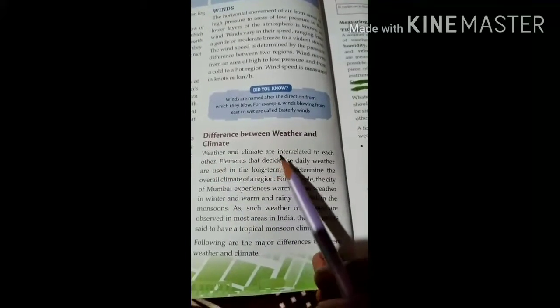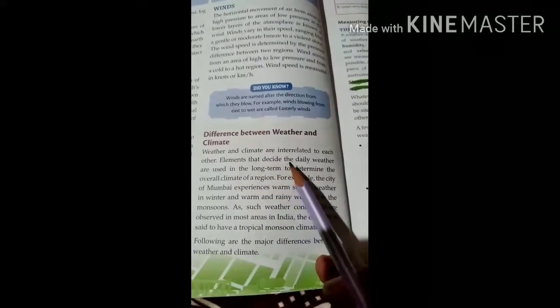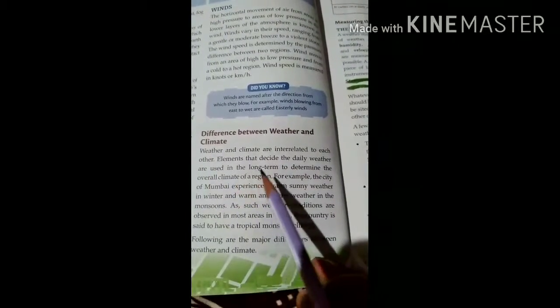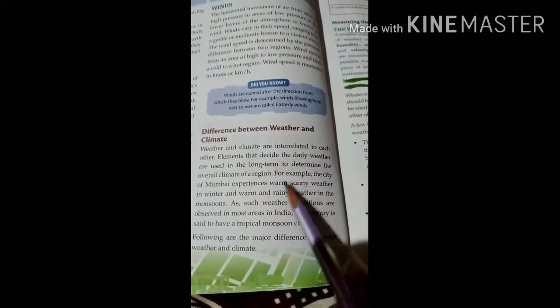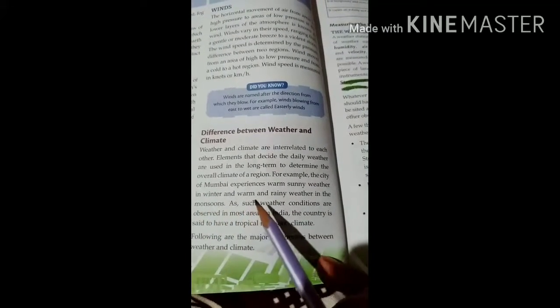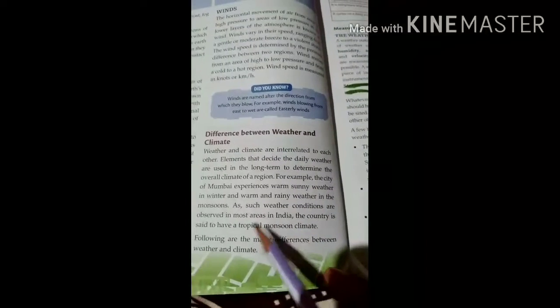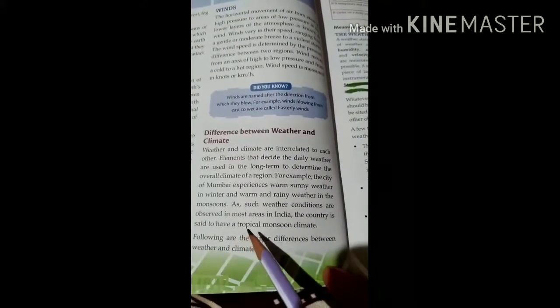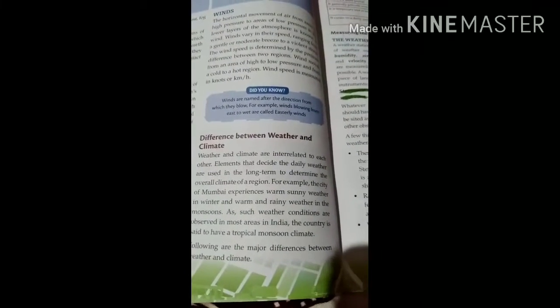Now difference between weather and climate. Weather and climate are interrelated to each other. Elements that decide the daily weather are used in the long term to determine the overall climate of a region. For example, the city of Bombay experiences warm sunny weather in winter and warm and rainy weather in the monsoon. As such weather conditions are observed in most areas in India, the country is said to have a tropical monsoon climate. Following are the major differences between weather and climate.